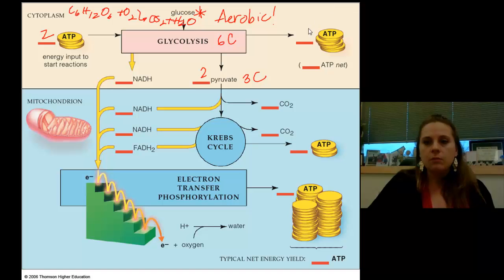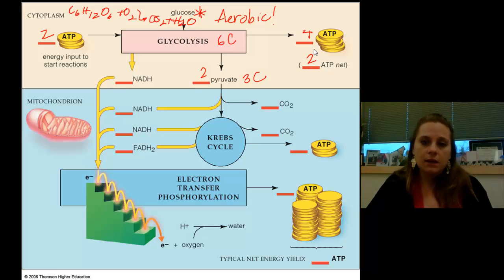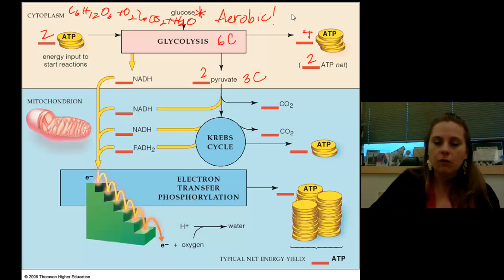So we create two pyruvate molecules out of our six carbon molecule. This is a three carbon molecule. We get out of it four ATPs. But as a result of having used two, we only net two of them. This is occurring in the cytoplasm of the cell. And from here, we're going to move into the mitochondria itself.